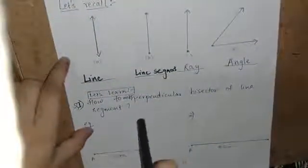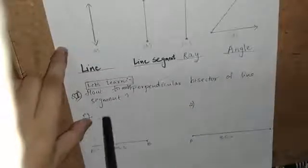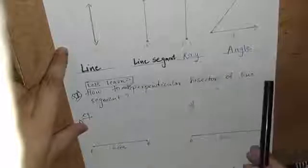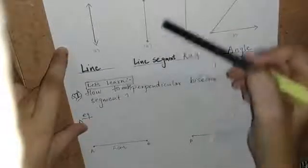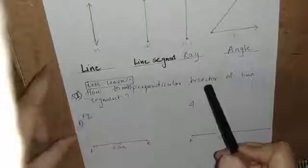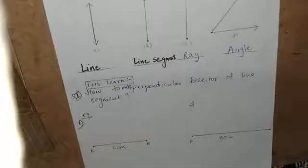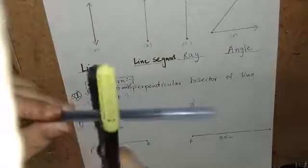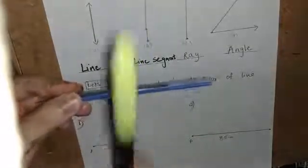So in class 7th, what are you going to learn? We will learn how to make the perpendicular bisector of a line segment. Perpendicular means 90 degrees, and bisector means cutting into equal parts. So if this is a line segment, this line bisects it. We call it a perpendicular bisector because the angle made here is 90 degrees.